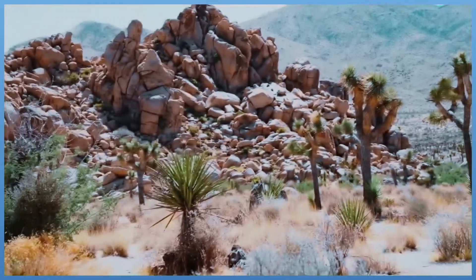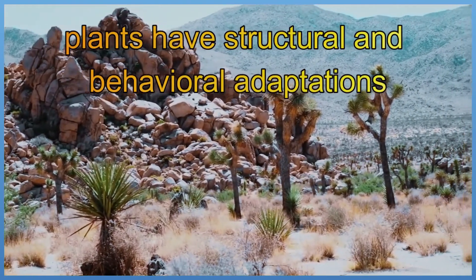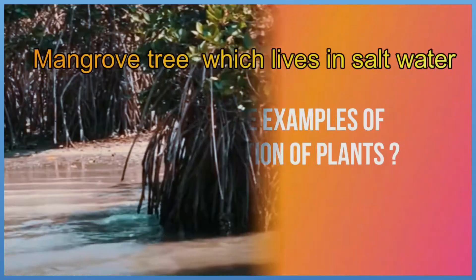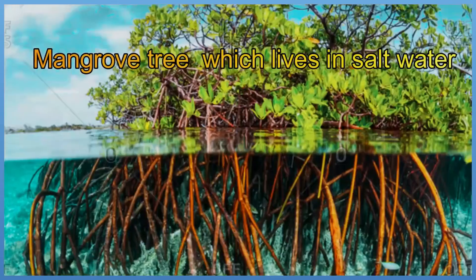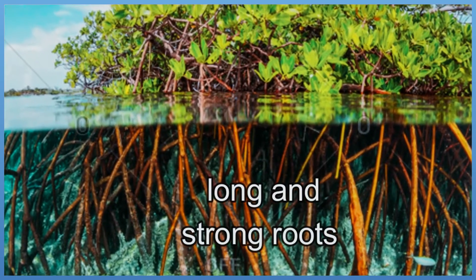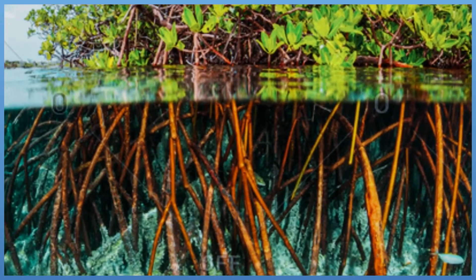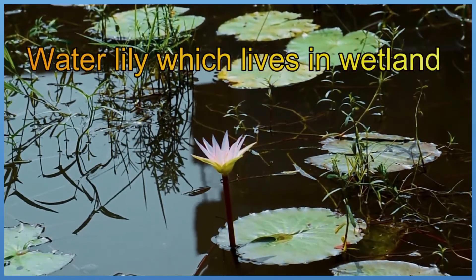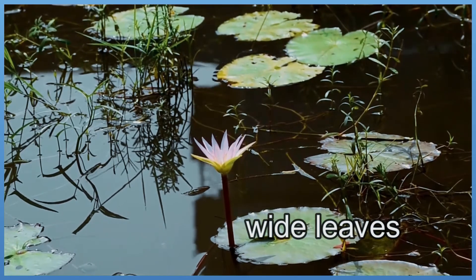Like animals, plants have structural and behavioral adaptations that help them survive and grow in their environments. The mangrove tree, which lives in salt water, has long and strong roots to resist the waves and strong winds. The water lily, which lives in wetland, has wide leaves that float on the water surface to absorb a large amount of sunlight.